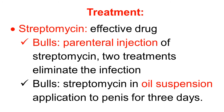We now discuss the treatment aspect of bovine genital campylobacteriosis. Streptomycin is a highly effective drug. In bulls, parenteral injections of streptomycin are given — just two injections are sufficient to eliminate the infection from the bull. Further, the bull can be treated with streptomycin in oil suspension, which is applied to the penis and prepuce for 3 days to clear the infection.